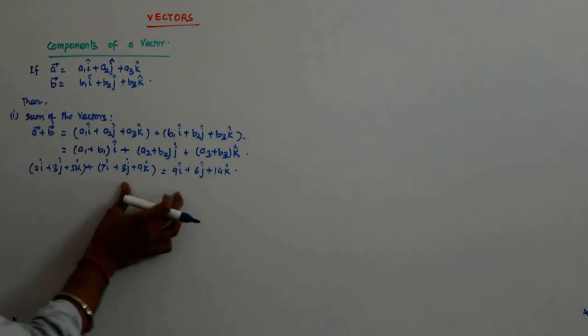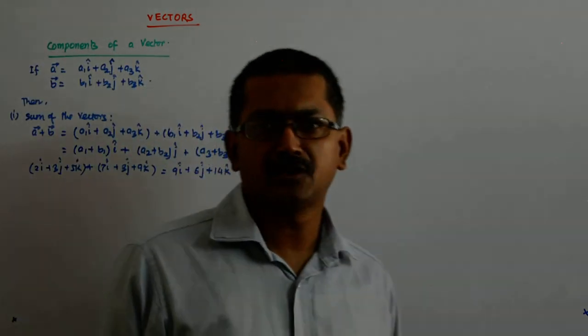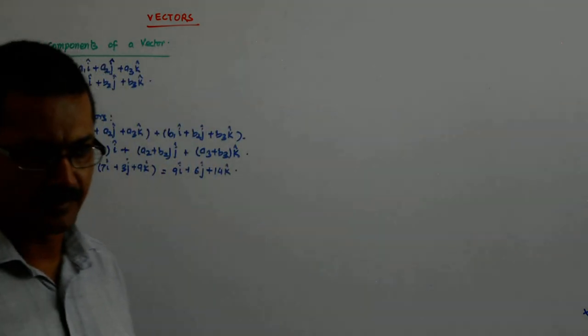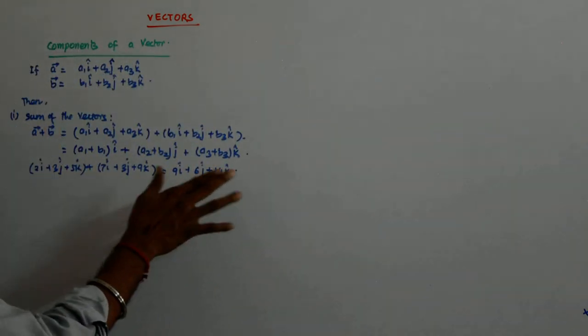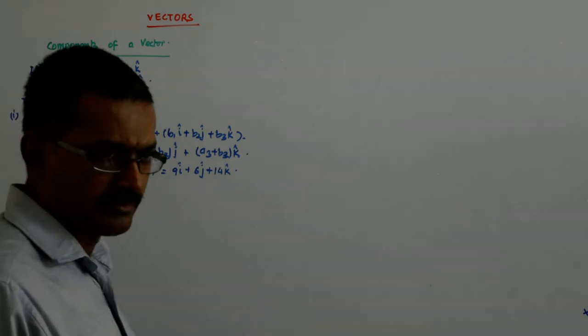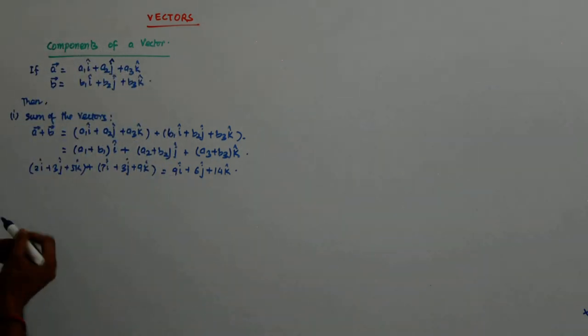Given these two vectors, if I want you to find out the length of the resultant vector, you can tell me. This will be 9 square plus 6 square plus 14 square root over, right?